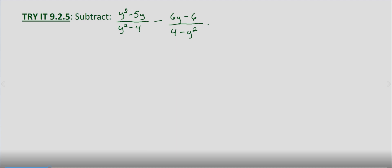Right now, if you'll notice, one is just the opposite of the other. We have y squared minus four, and we have four minus y squared. And the example you saw in the lesson, they multiplied the numerator and denominator by negative one.